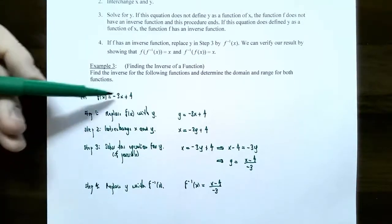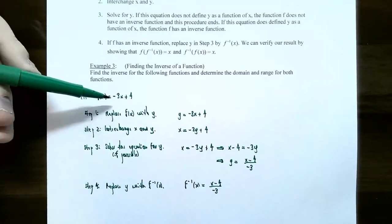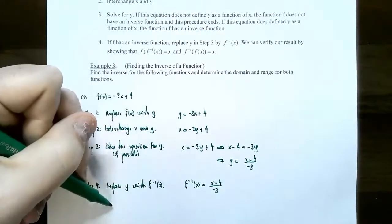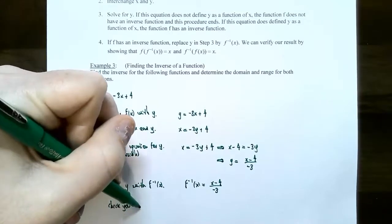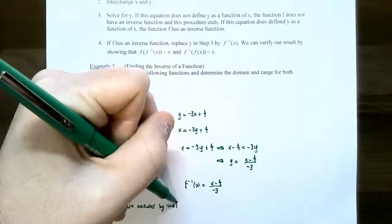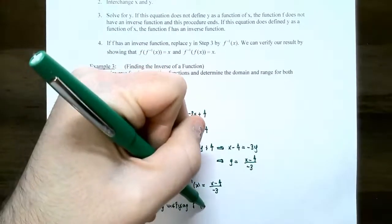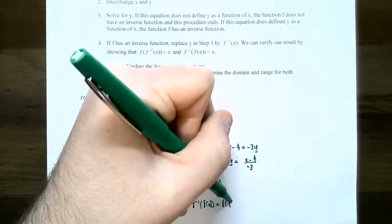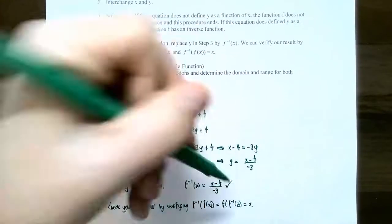Notice that the inverse is not just the reciprocal — if you want to find the inverse, you have to go through the four steps. You can't just take one divided by negative three x plus four. Keep in mind that you can always check your answer by verifying that the composition gives you just x. You can do f inverse of f of x, or f of f inverse of x, and either way it should give just x. If you do get x, then that must be the correct inverse.